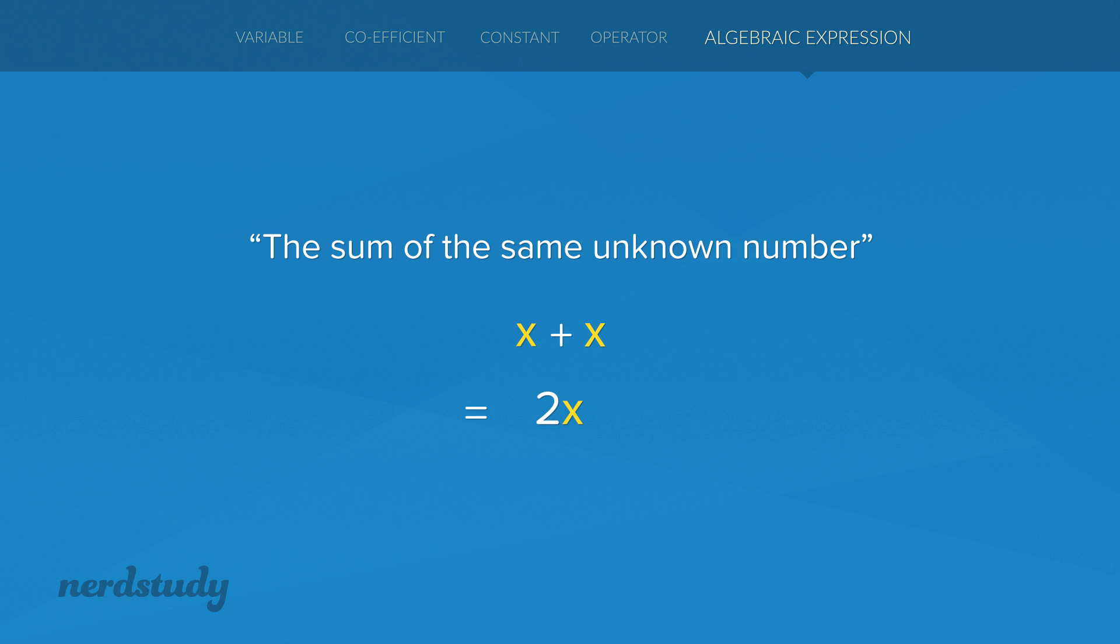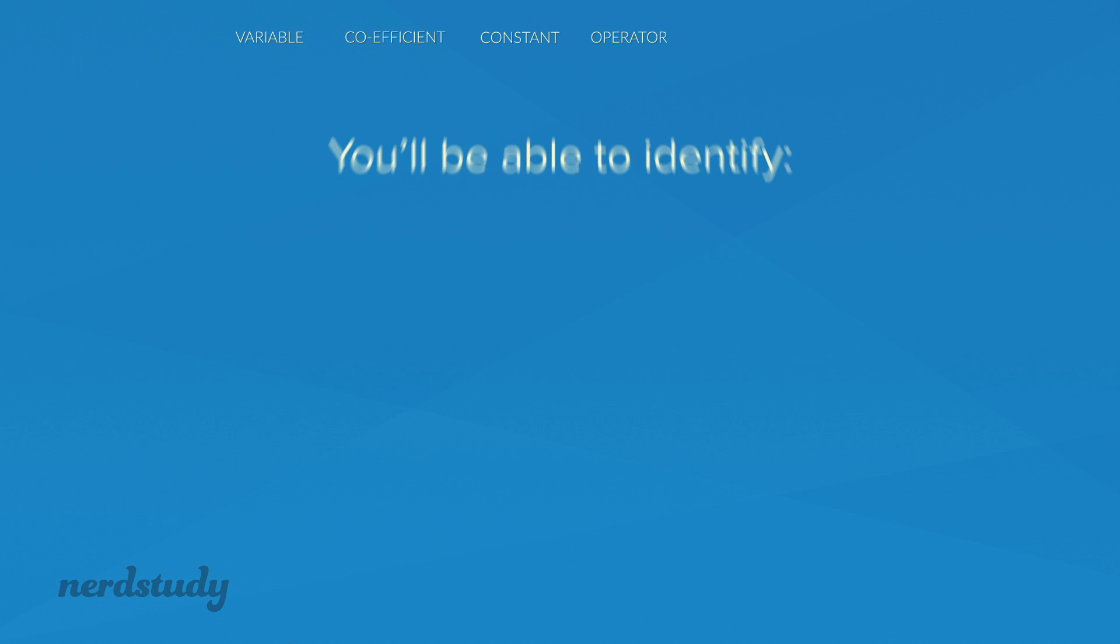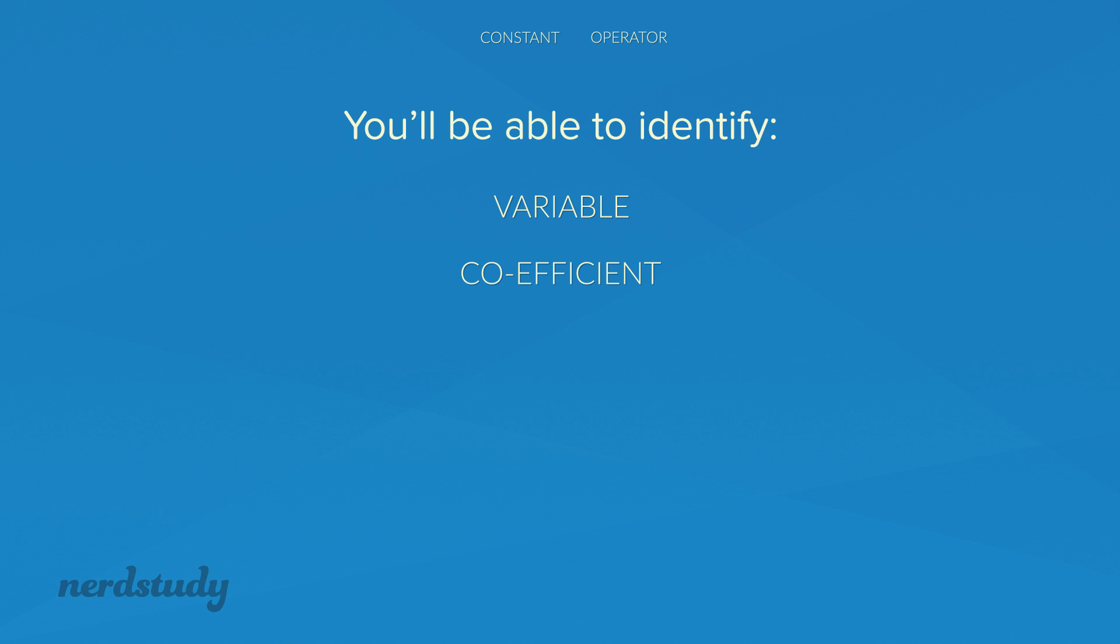So there you have it. Now you know what an algebraic expression can look like. You'll be able to identify variables, coefficients, constants, and operators.